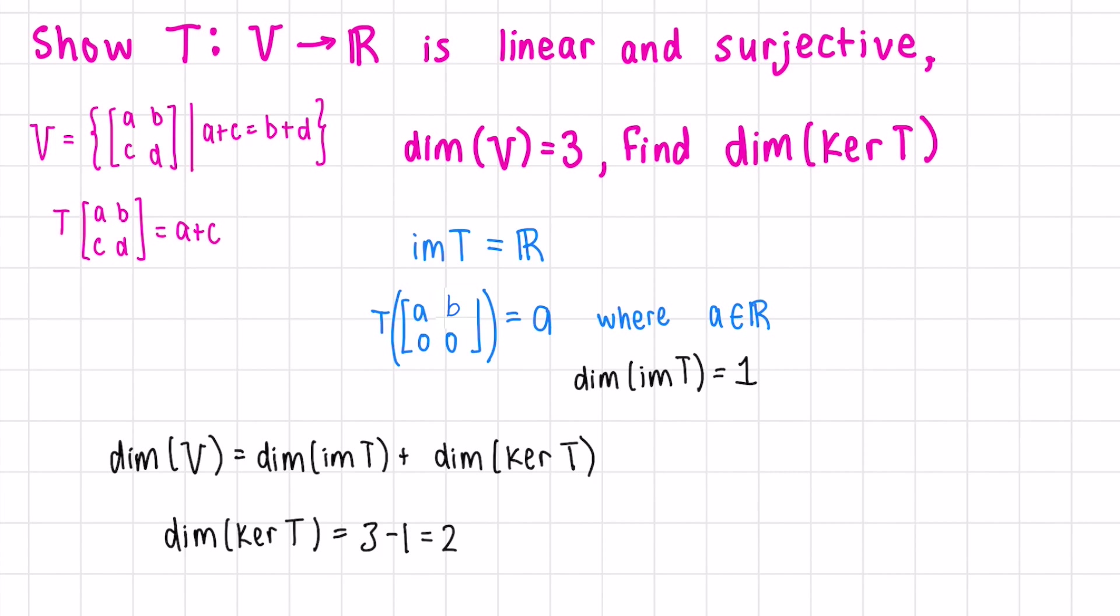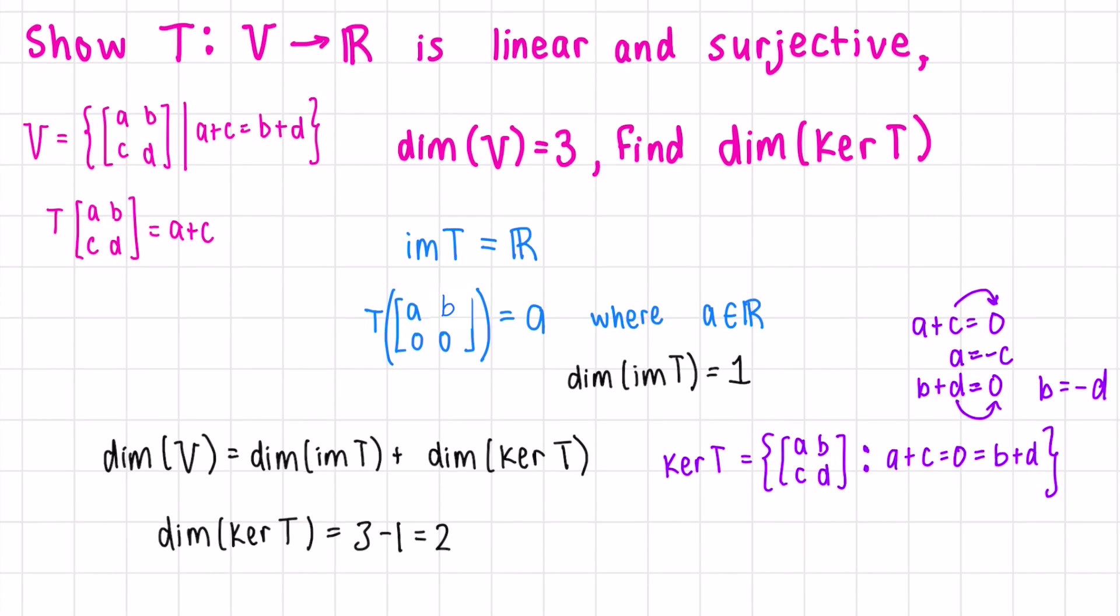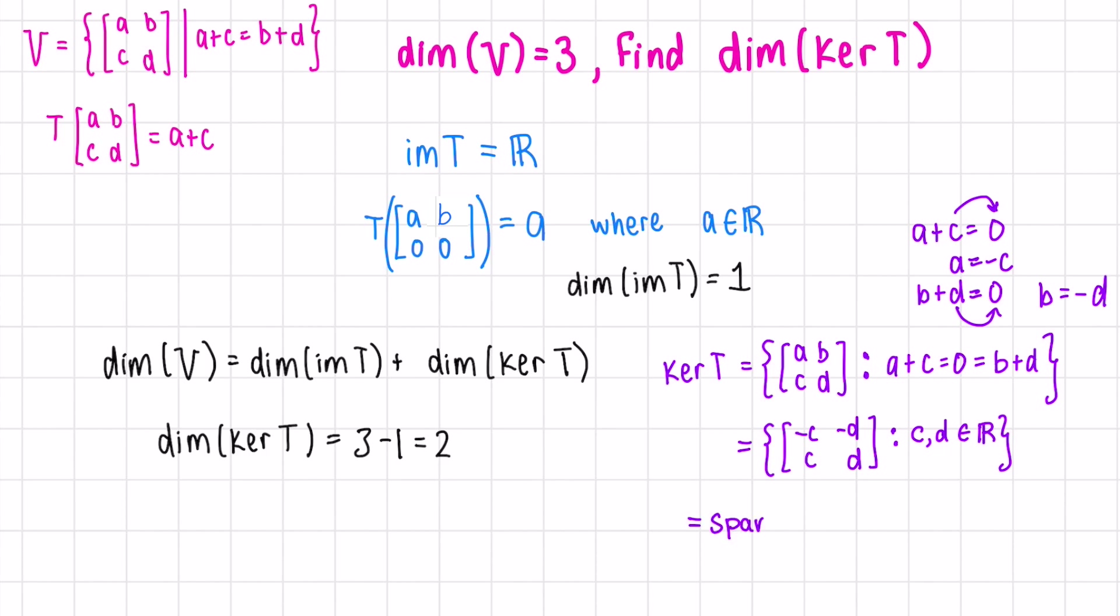To find the actual basis of this kernel wouldn't be too hard. The kernel of T would be all matrices in our set V that when transformed go to the zero vector, which in R would just be 0. So A plus C equals 0, which means 0 is also B plus D. Let's solve these equations: A equals negative C, and B equals negative D. So the matrices in the kernel of the transformation can be rewritten as a span of two matrices, and the basis for the kernel would be those two matrices. As we expected, the dimension of the kernel is 2.